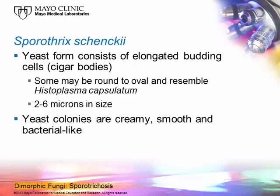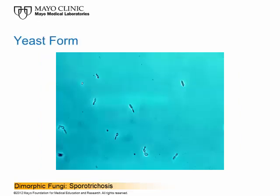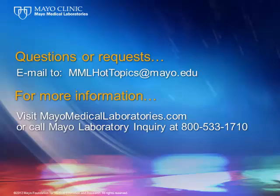The cigar bodies are about the same size as Histoplasma, between 2 to 6 microns. Some are round, some are oval, and it might look a little bit like Histoplasma, but you'll still see the elongated ones. The yeast colonies that grow overnight are creamy, smooth, and bacterial-like. The melanized mold form converts to that creamy yeast-like form after incubation at 35 to 37 degrees centigrade. There are the cigar bodies — elongated cells. Sporothrix is about the only yeast you see that is elongated. Each one of those cells is capable of producing a bud and it just continues on.